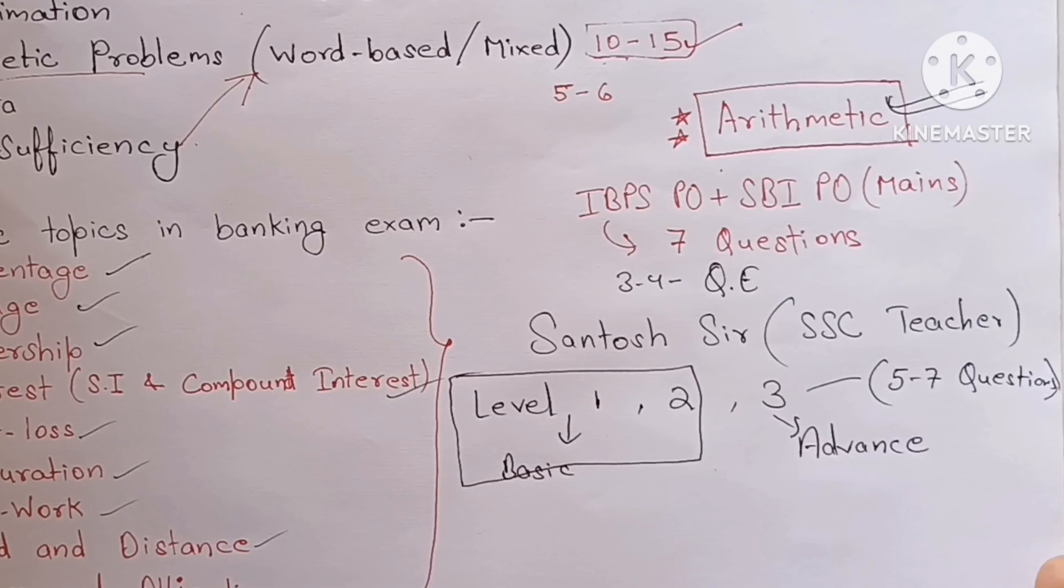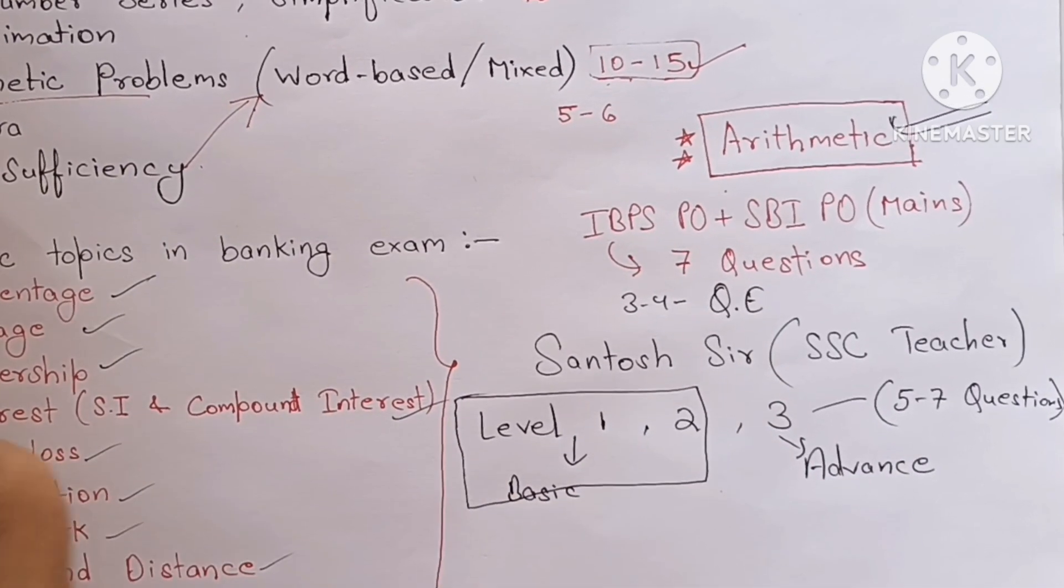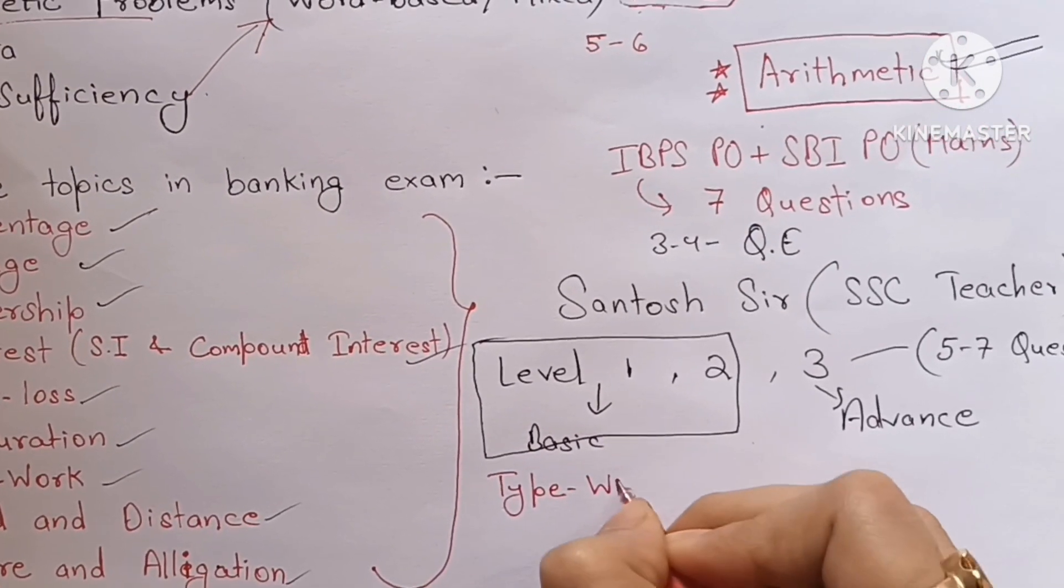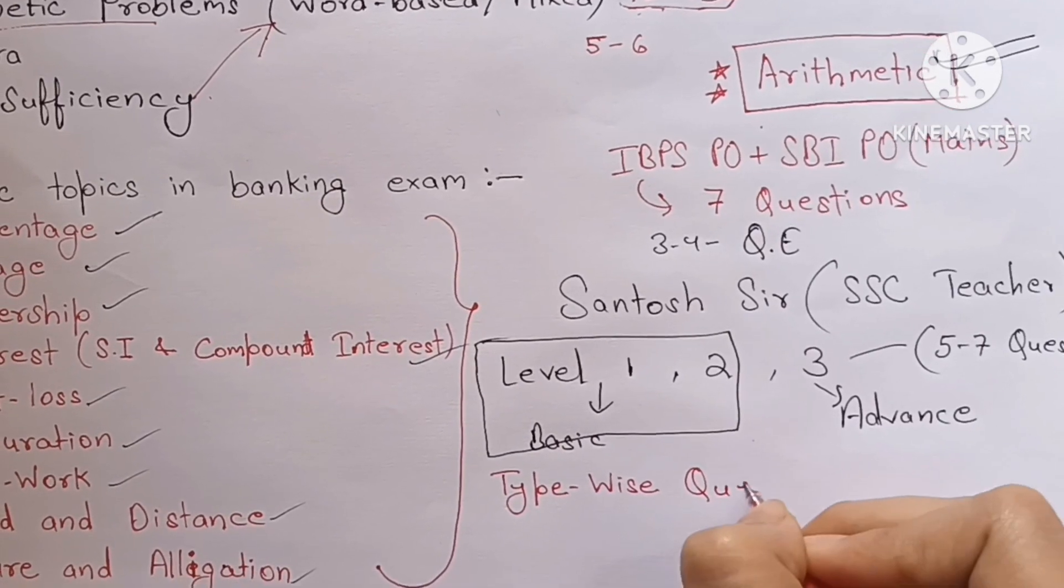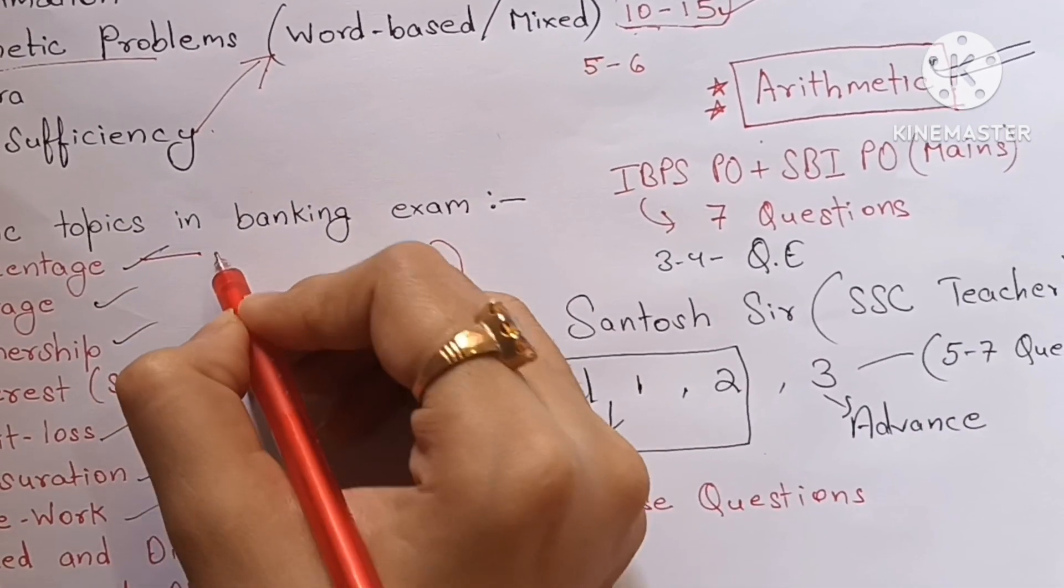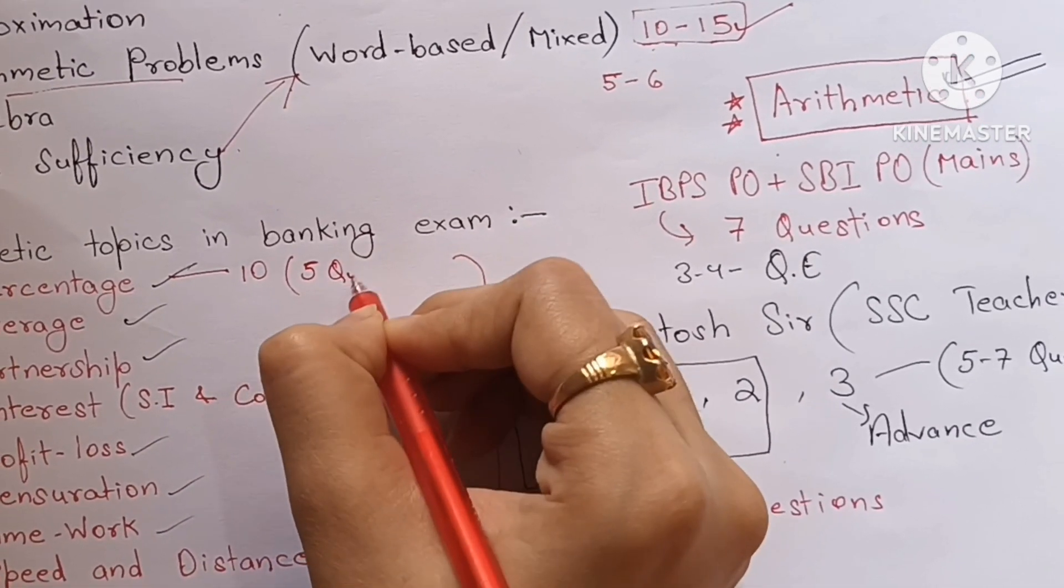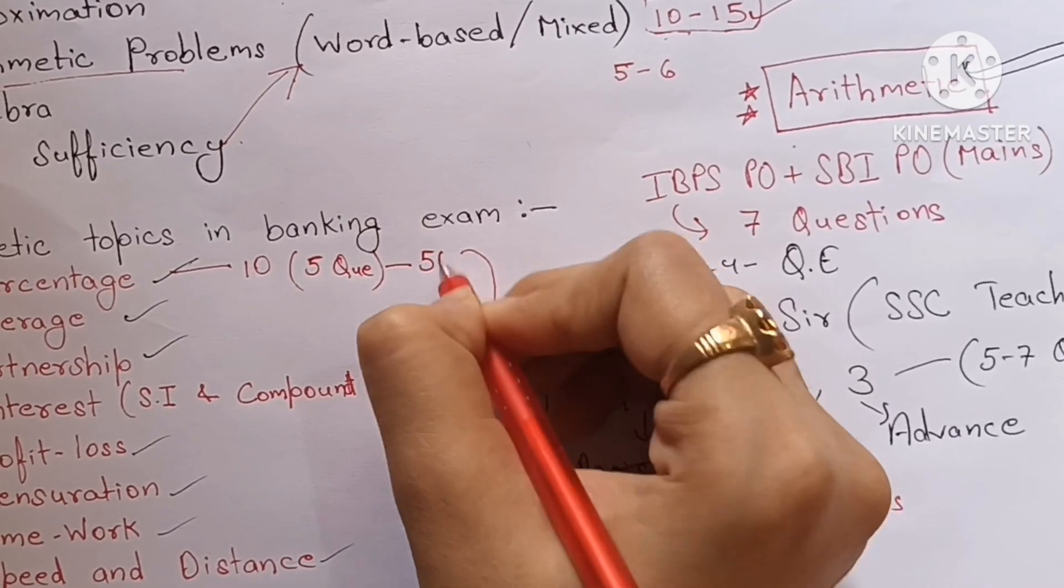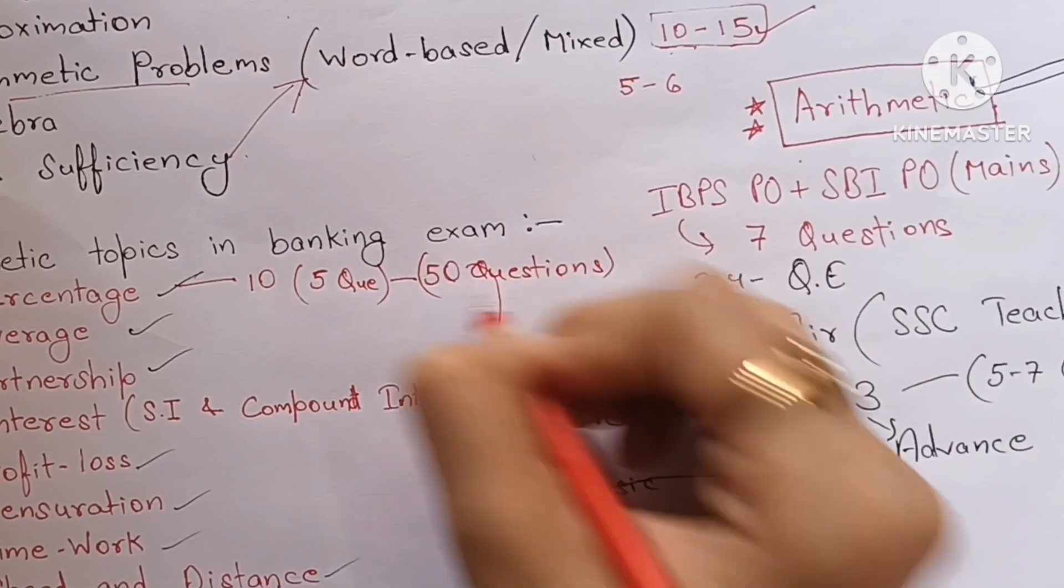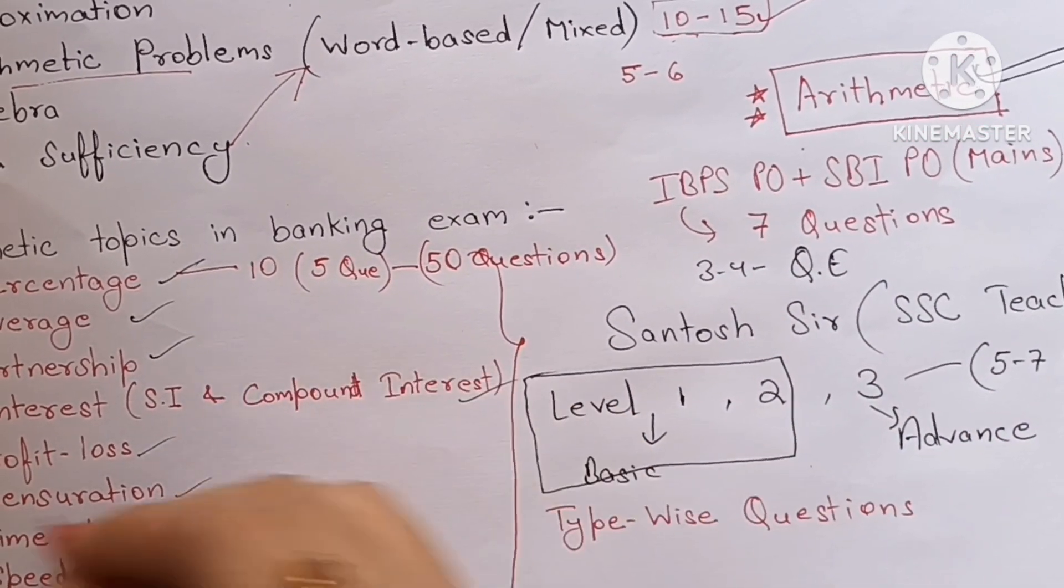And the second most important thing is that each topic contains type-wise questions. Like if you are studying percentage, you will find around 10 types of questions in that. So what you have to do is make a copy and write five questions of each type, so you will collect 50 questions of this topic percentage. And now after every 10 days you have to solve those 50 questions, and once it becomes clear to you, revise it in a month or two.